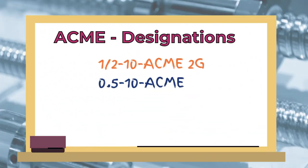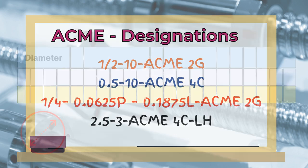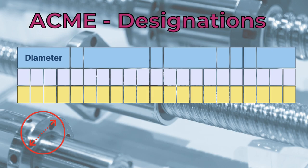And now, let's move on by getting familiar with the designation of ACME threads. The first few characters represent the nominal diameter in inches. The permissible range is one quarter to five inches. It is typically noted in inch fractions, for example, one quarter. But it is also allowed to express the diameter in decimals.